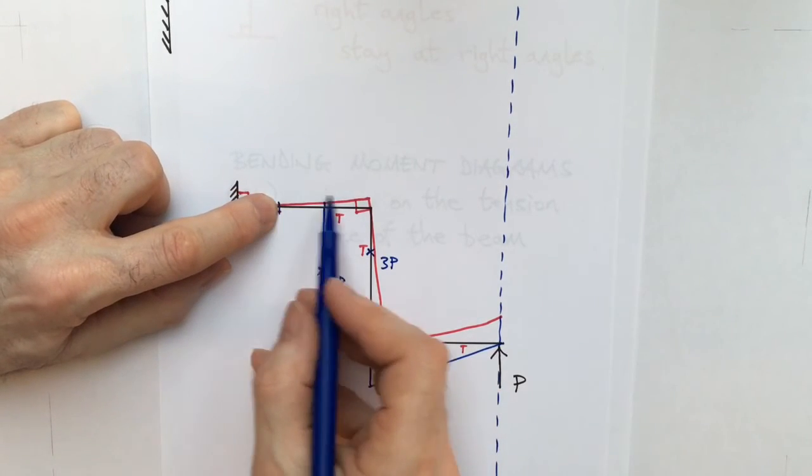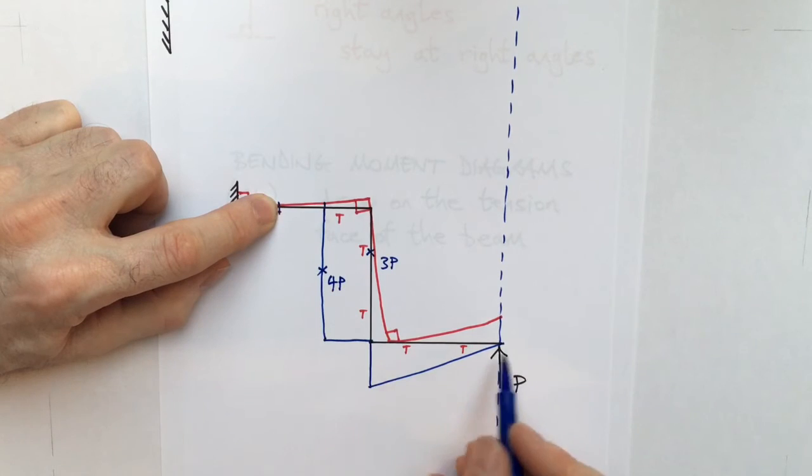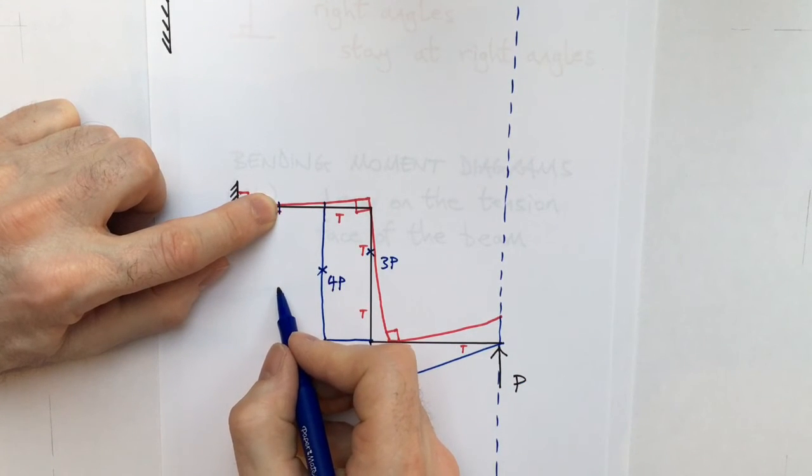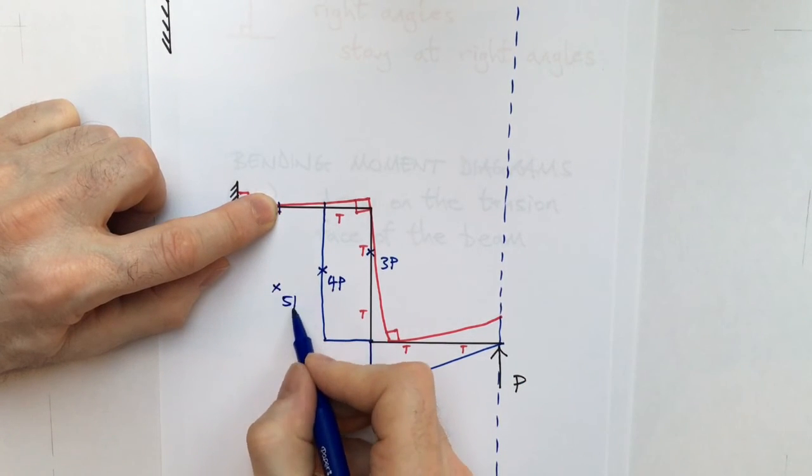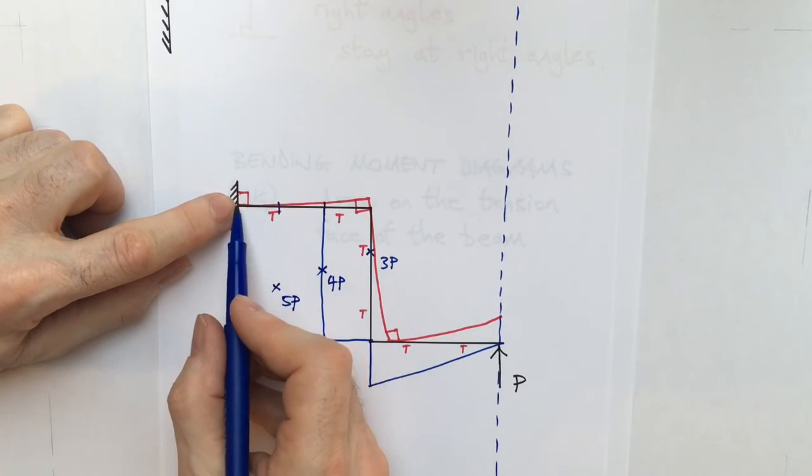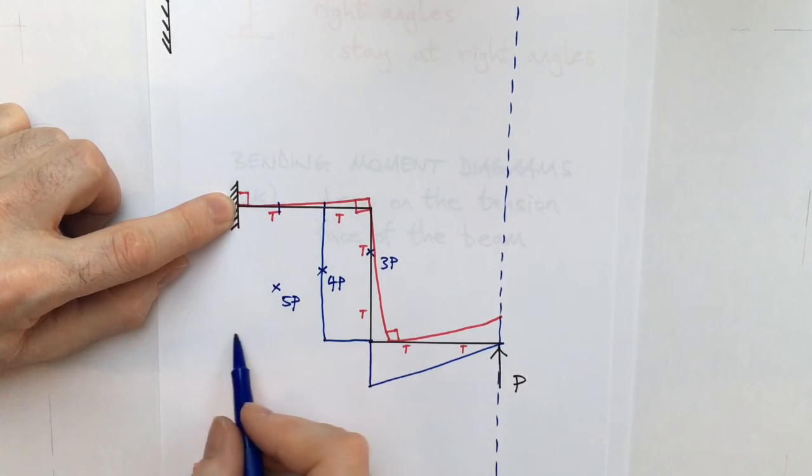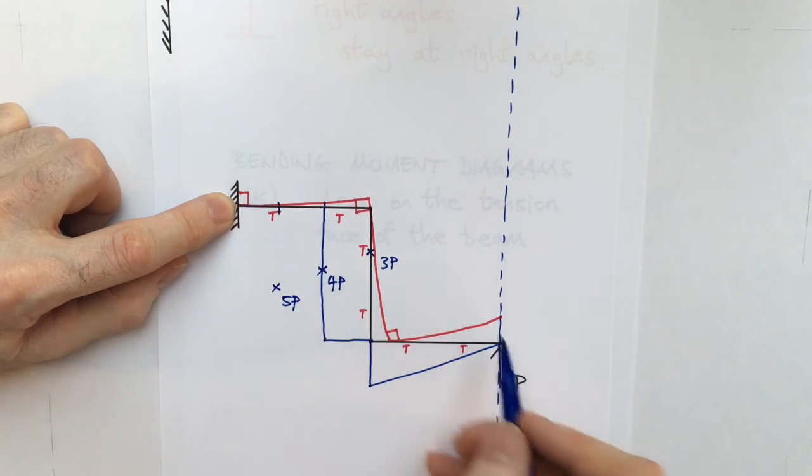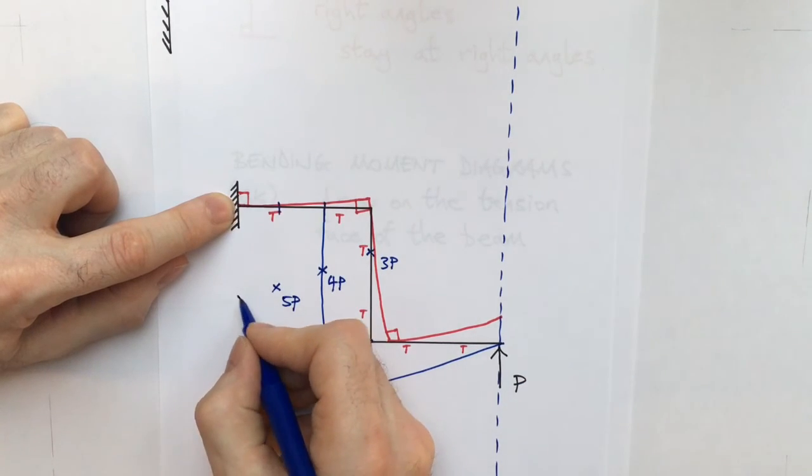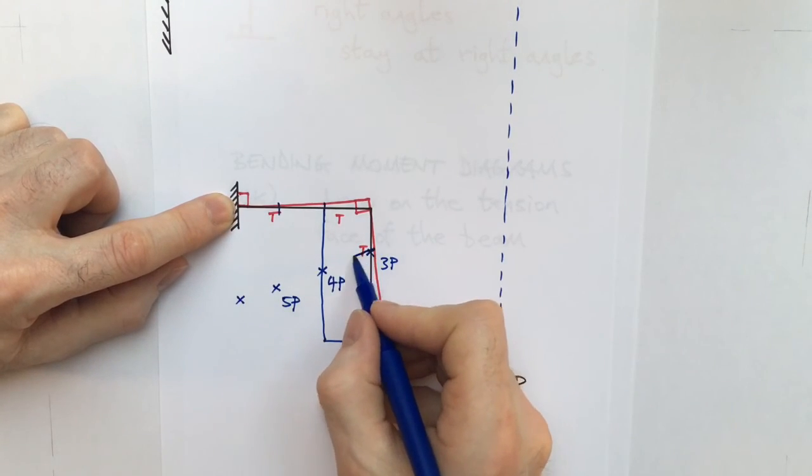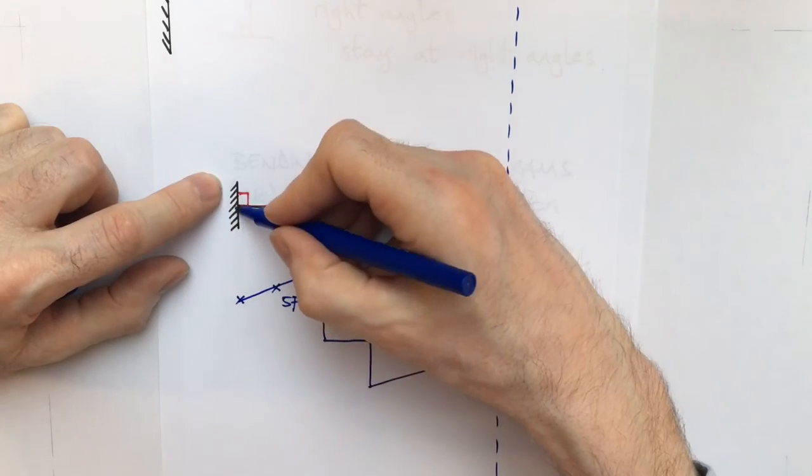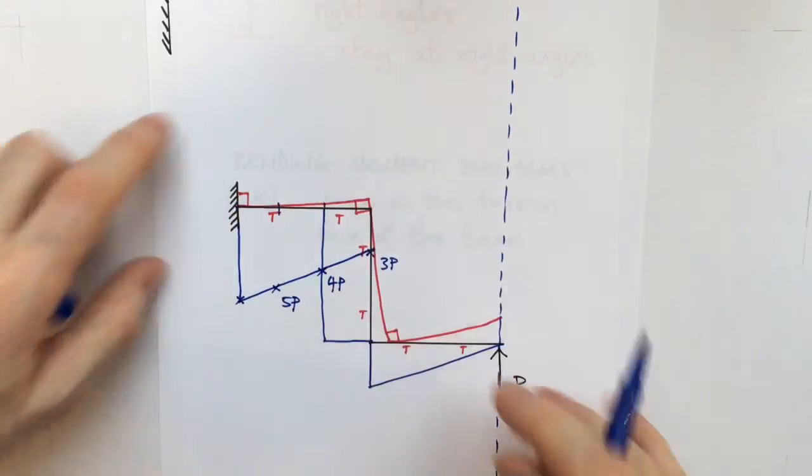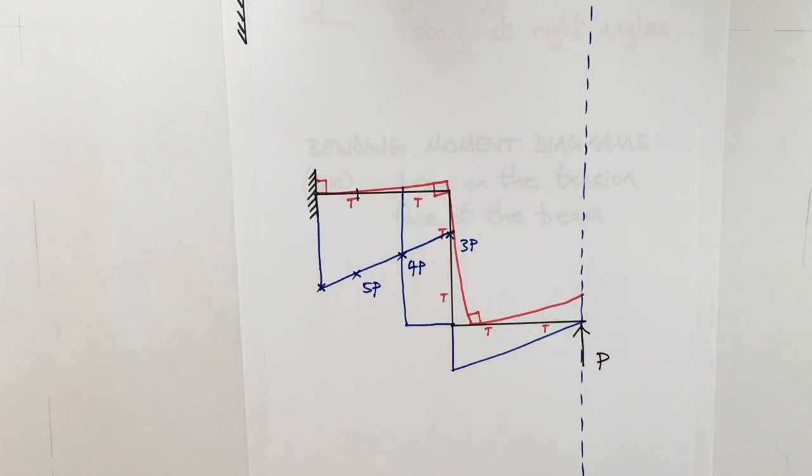So I move another meter away. It's going to be another meter further away. So in this case it's going to be five P. Finally, as I move further away again, it's going to be just a little bit further away, which is six. So six times P. So it's going to be six P. So I can now draw on the bending moment shape there. That seems like an awful lot of effort to come up with the bending moment diagram.